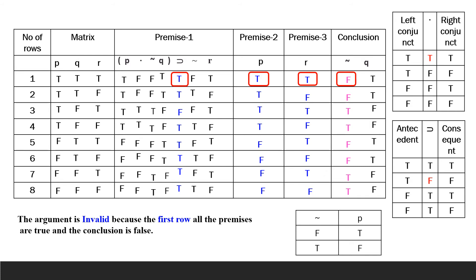We check whether the argument is valid or invalid. If all the premises are true and the conclusion is false, it is invalid. In the first row, premise 1 is true, premise 2 is true, and premise 3 is true — so we check the conclusion: it is false. We have found the invalidity condition in the first row itself, so the argument is invalid, since all premises are true and the conclusion is false.